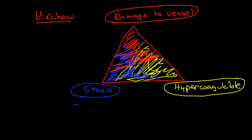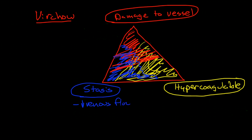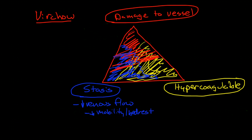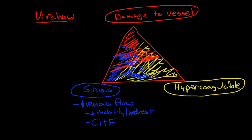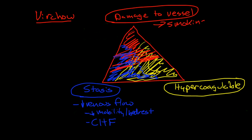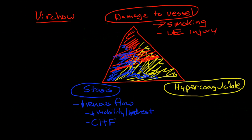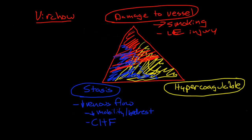So what can cause stasis? Anything in which you have low venous flow for a period of time. This could be decreased mobility, bed rest — which we see in hospital patients quite frequently. This could also be due to another disease such as congestive heart failure, in which you have poor flow back to the heart. Damage to the vessel can take place in a number of forms — it could be due to chemical injury from smoking, or a physical injury to the lower extremity.